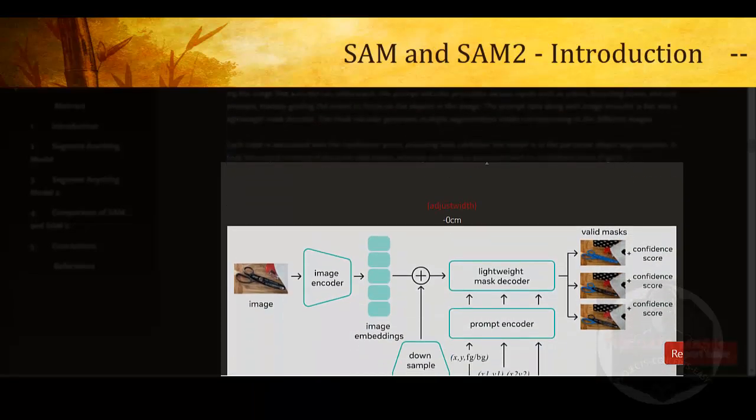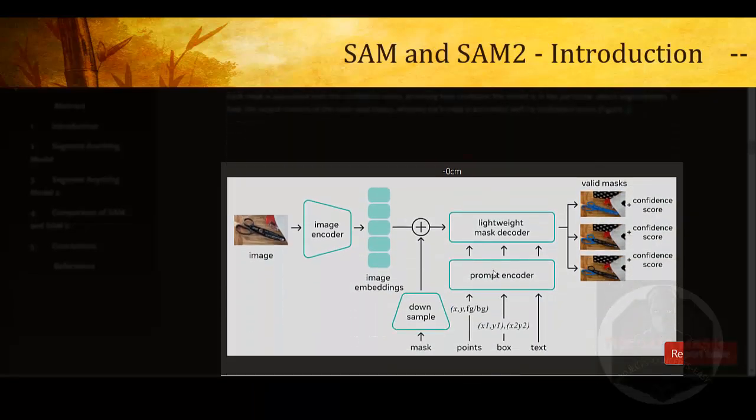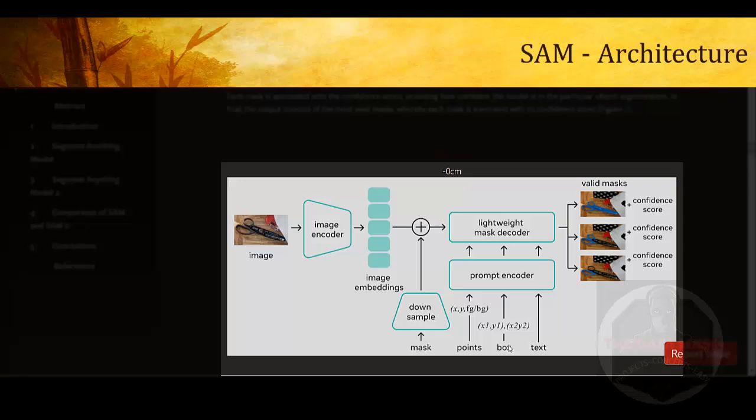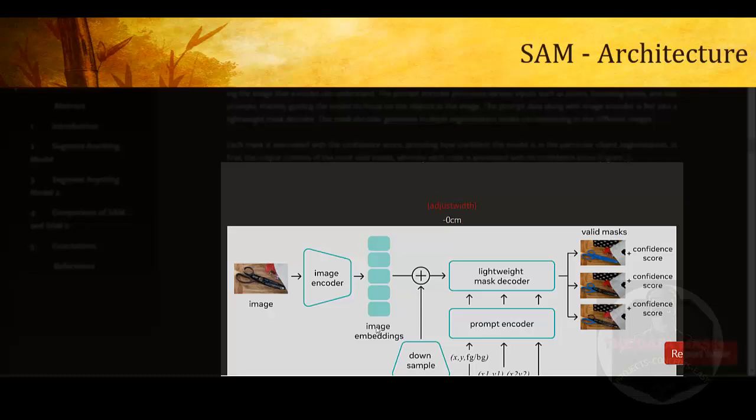Let us first discuss about SAM Segment Anything Model. This is the architecture of Segment Anything Model. SAM will work on images - it can work on satellite images, it can work on natural images, and it can work with prompts also. There are three types of prompts which can be given to the SAM encoder: point prompt, box prompt, or text prompt.